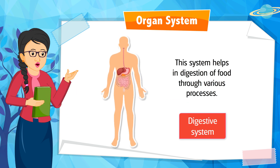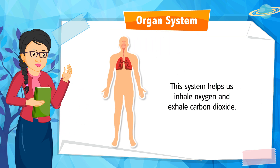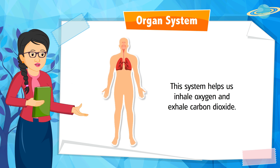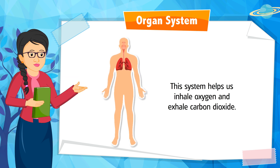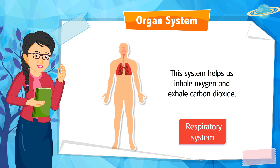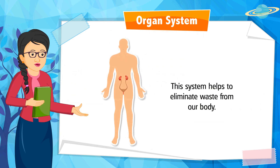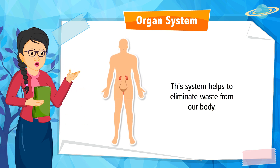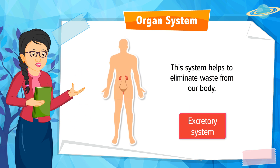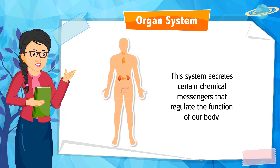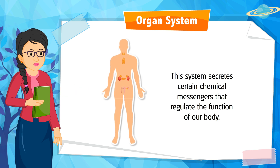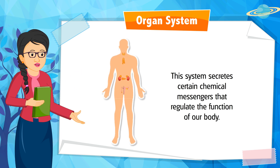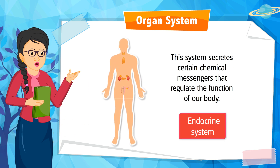This system helps us inhale oxygen and exhale carbon dioxide. Can you identify it? It is the respiratory system. This system helps to eliminate waste from our body. Can you identify it? It is the excretory system. This system secretes certain chemical messengers that regulate the functions of our body. Can you identify it? It is the endocrine system.